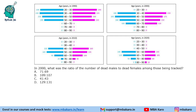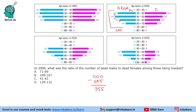The first question says: in 2000, what was the ratio of the number of dead males to dead females among those being tracked? So in 2000 we need to find dead males to dead females. The number of alive males is 385 plus 260, which comes to 645. There were 1000 males and 645 are alive, meaning 355 are dead.